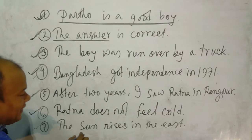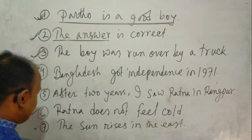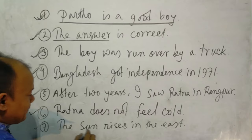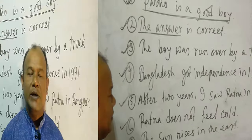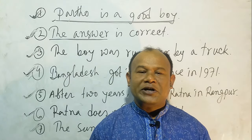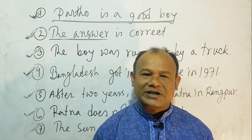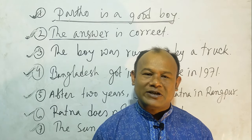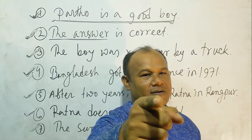Number 7: The sun rises in the east — this sentence expresses a universal truth. Dear learners, if we consider these sentences as assertive ones, what will be the definition of an assertive sentence? Let's learn.